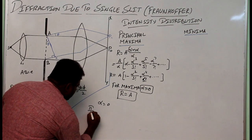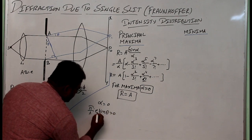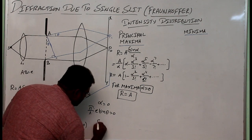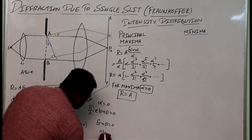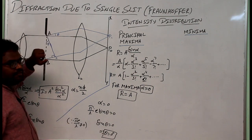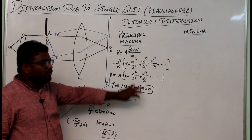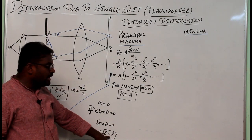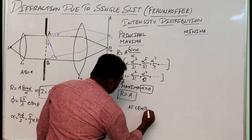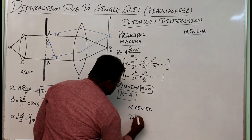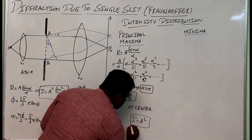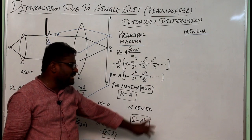Taking the condition α = 0: α = (π/λ)·e·sinθ = 0. Since π/λ cannot be zero (it is a constant), the only possibility is sinθ = 0, which implies θ = 0°. Hence we conclude that the light rays giving the principal maxima are those traveling with θ = 0°, meaning no deviation. The resultant intensity at the center of the screen is I = R² = A², or simply I = A².